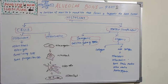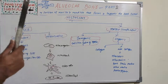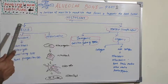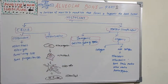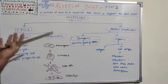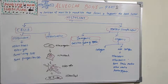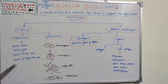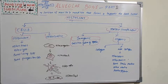Alveolar bone part 2. In this session we will be dealing with cells and matrix components of alveolar bone. We have basically two types of cells: osteogenic and osteoclastic. Osteogenic, as the name suggests, creates cells, and osteoclastic destroys cells. Osteogenic cells are osteoblasts, osteocytes, bone lining cells, and bone progenitor cells.